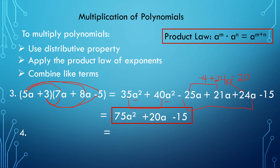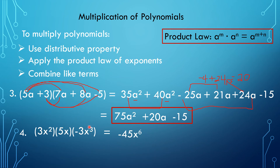Next, I have 3x squared times 5x times negative 3x cubed. Just multiply the numbers: 3 times 5 is 15, times negative 3 is negative 45. And for x, add the exponents: 2 plus 1 plus 3 equals 6. So the answer is negative 45x to the 6th power.